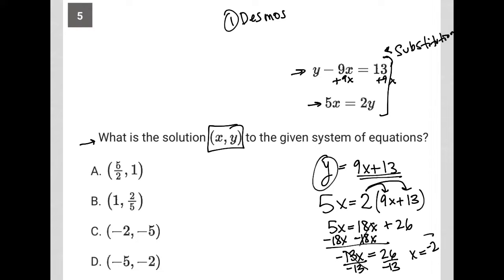So I know that my x value has to be negative 2. I look at my answer choices and only one of the options has x as negative 2. And that's choice C. So choice C must be the correct answer.